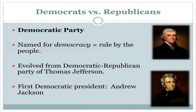So where do these two parties come from? The Democratic Party comes from the idea of democracy, which is rule by the people. This evolved from the Democratic-Republican Party of Thomas Jefferson, but the first president who was strictly a Democratic Party president was Andrew Jackson.